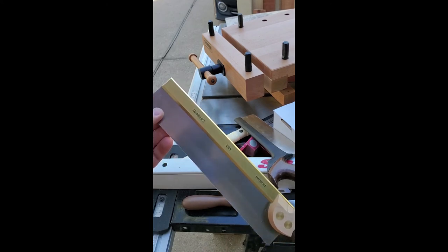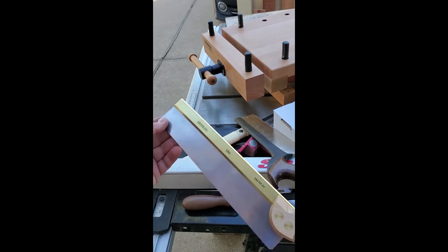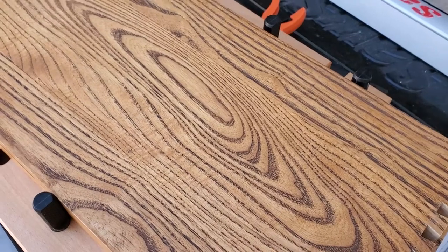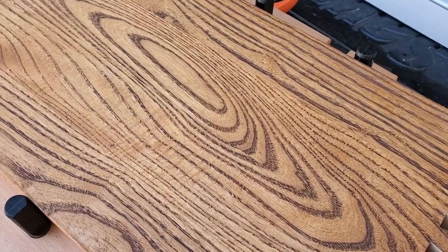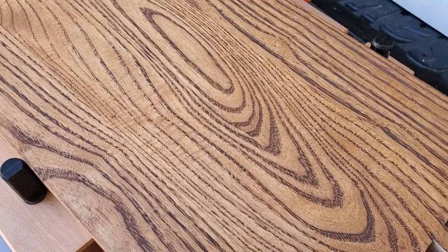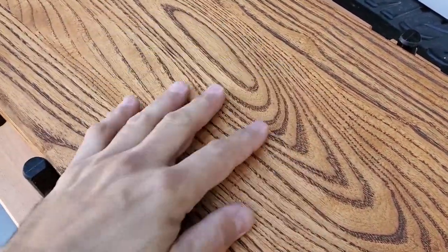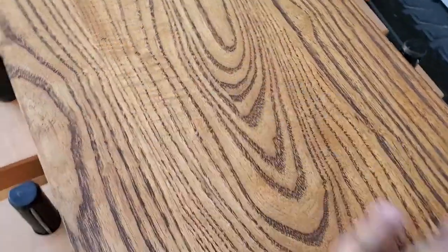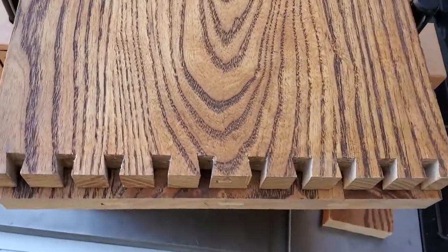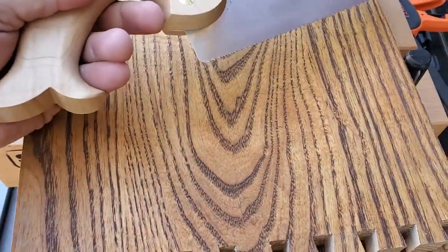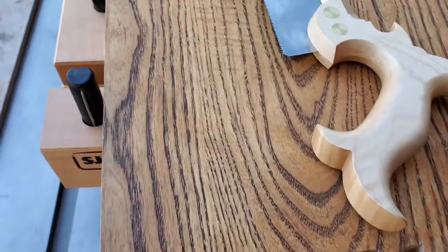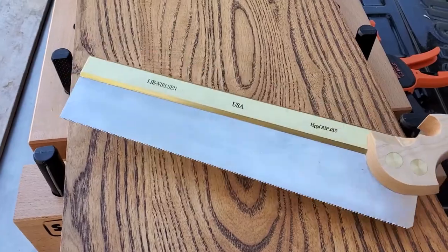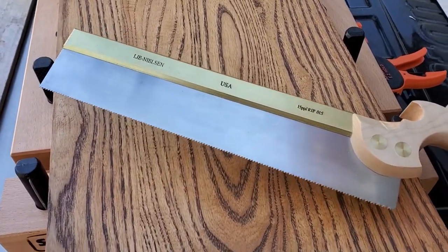So Lie Nielsen 15 PPI tapered dovetail saw, pretty awesome. All right, I just wanted to show you real quick, this, I've got kind of this piece of figured ash I'm making a dovetailed cabinet with. And I'm going to show you the first time ever using this saw. I've never used this before except to do the test cuts I showed you.